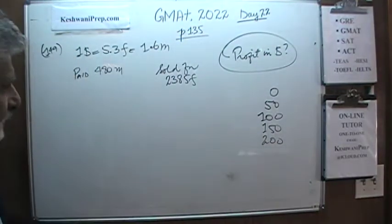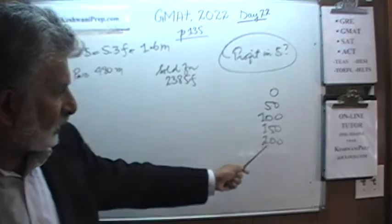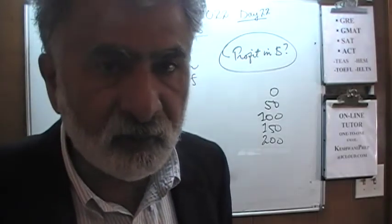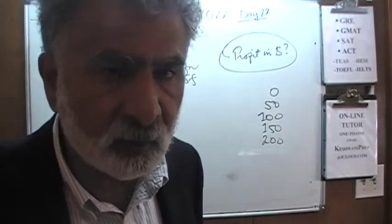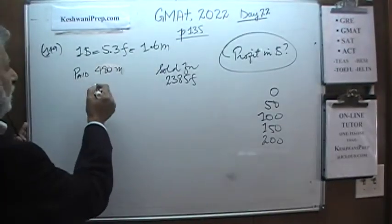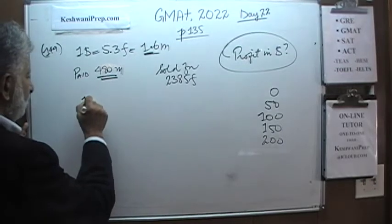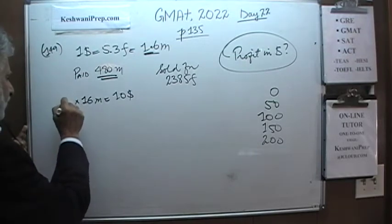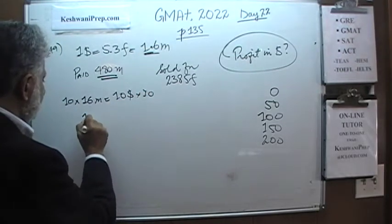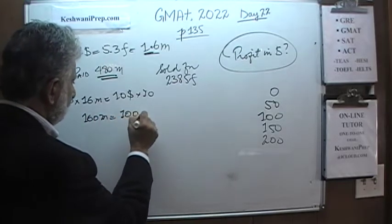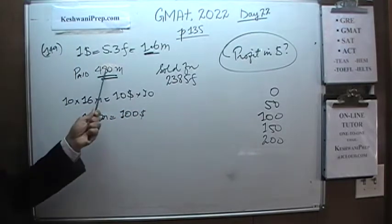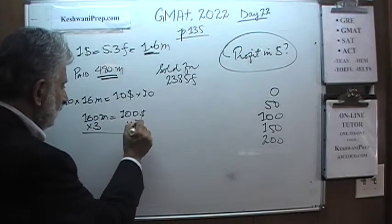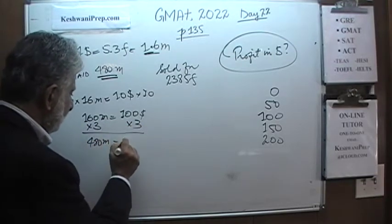We need to realize that we are looking for profit. If the answer is 0, he made no profit — he sold it for the same amount he bought it for. Let's see how much he paid in dollars. He paid 480 marks, and we know that 1.6 marks is $1. Multiply both sides by 10: 16 marks equals $10, so 160 marks equals $100. But he paid 480 marks, and 16 times 3 is 48, so 160 times 3 is 480. In other words, he paid $300.